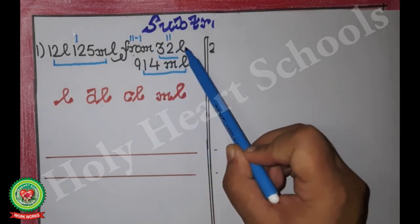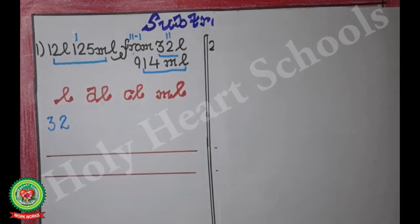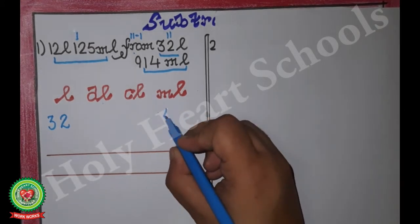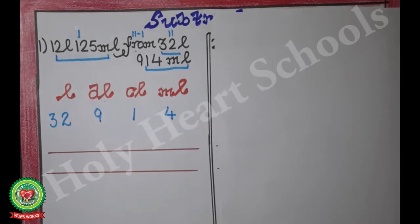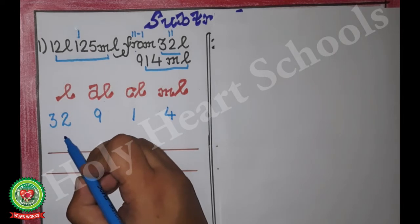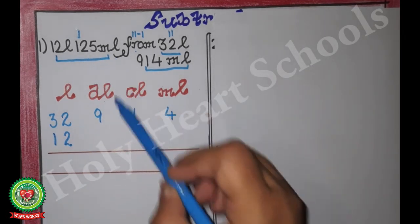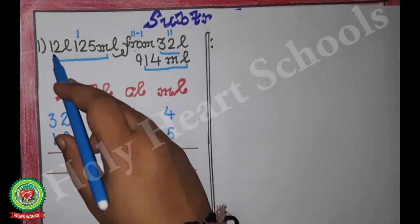First we write down the second number: 32 liters, so 32 will come under liter. Then 914 milliliters — we start writing from milliliter going back, so 4 under milliliter, 1 under centiliter, 9 under deciliter. Now for the first number, 12 liters: 2 under liter, 1 under the next column. Then 125 milliliters: 5 under milliliter, 2 under centiliter, and 1 under deciliter.